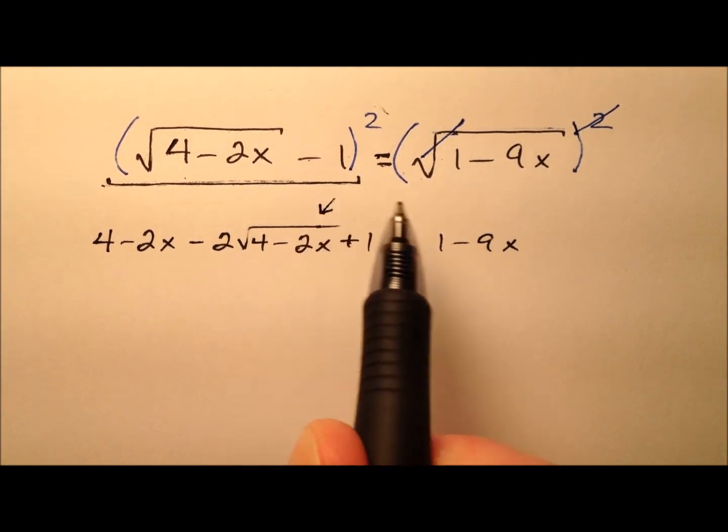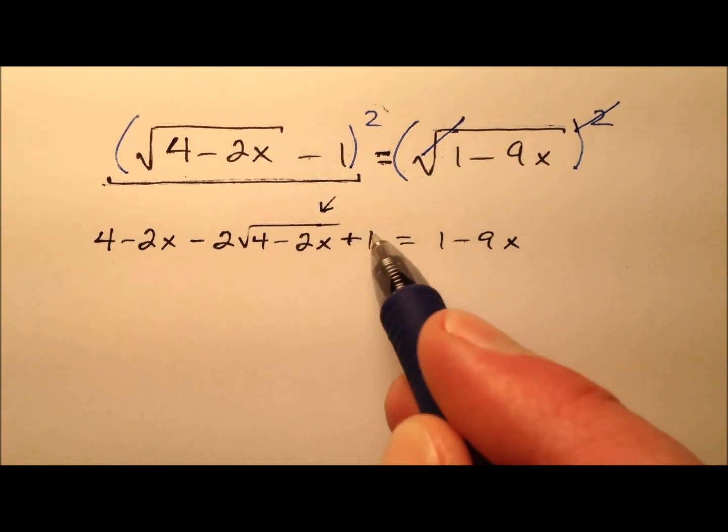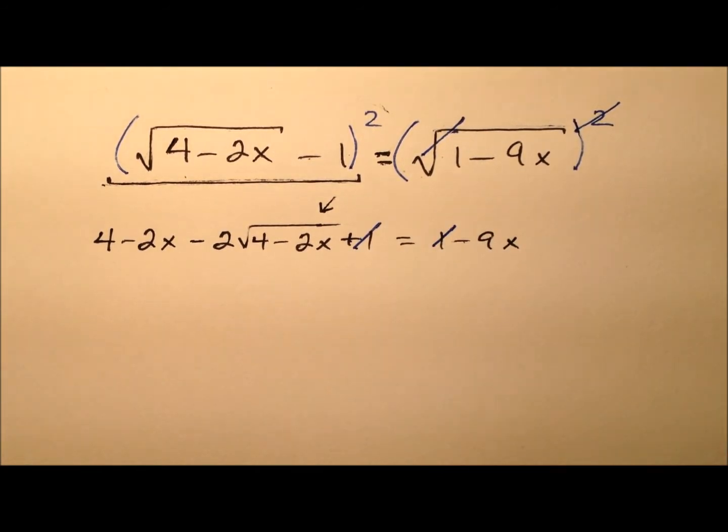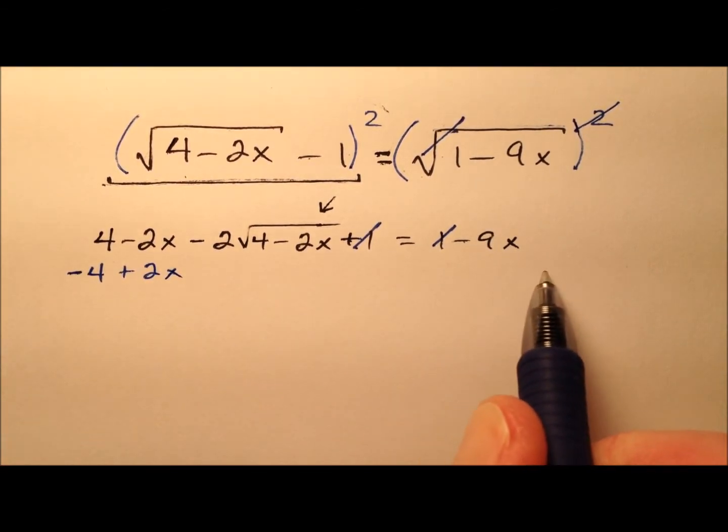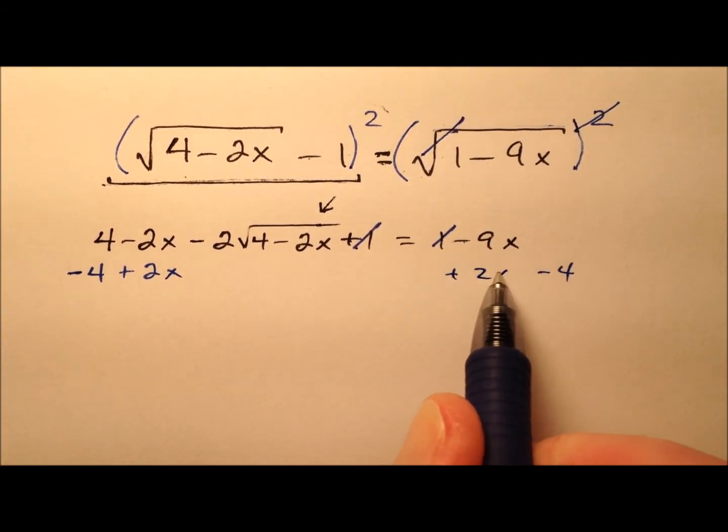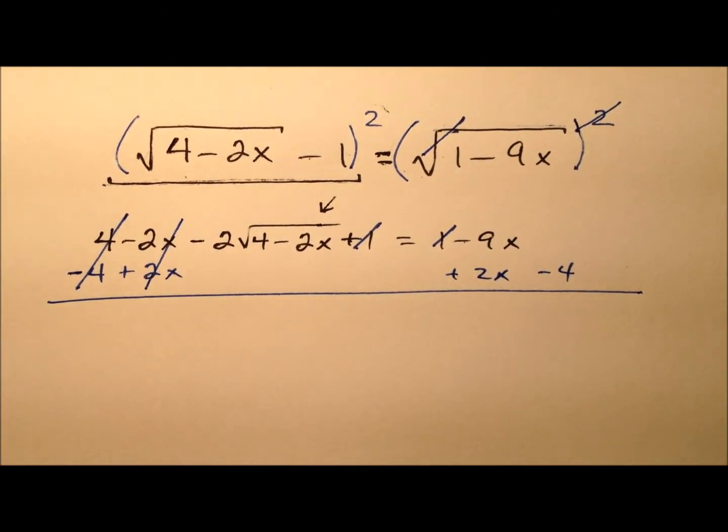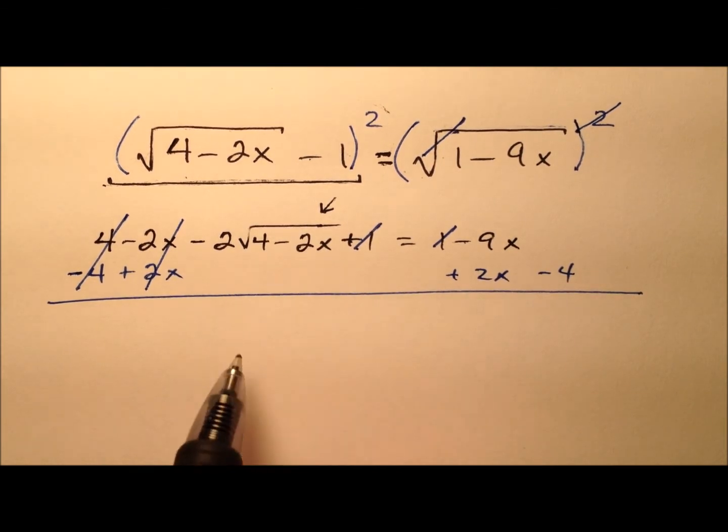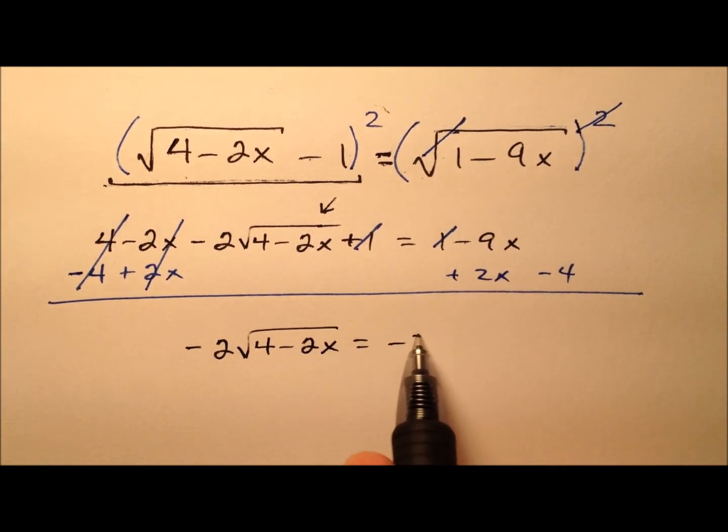Now we only have a single radical left. Notice that I have this positive 1, positive 1, so I can automatically cancel those out. Let's subtract 4 and add 2x to both sides. This is in an effort to get that second square root expression isolated. So we have the negative 2 times the square root of 4 minus 2x, and that's going to equal negative 7x minus 4.